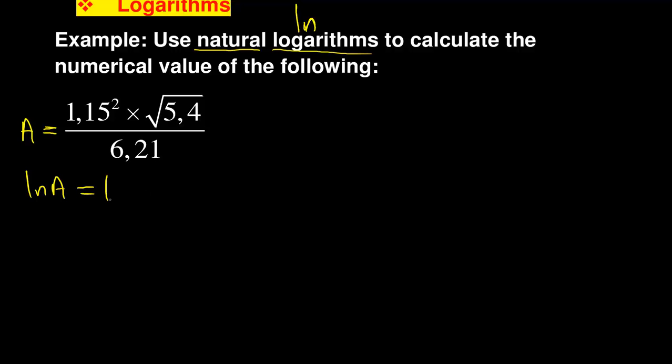So ln A equals ln of 1.15 squared times square root of 5.4 divided by 6.21. Write it so that ln is on both the left and right hand sides. Ln and logarithms use the same laws.